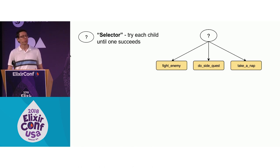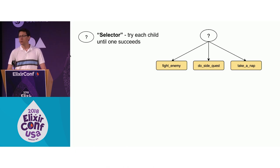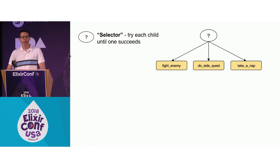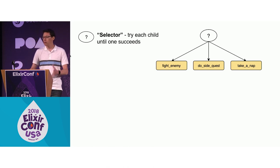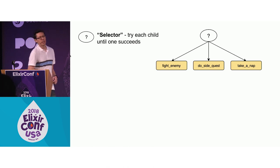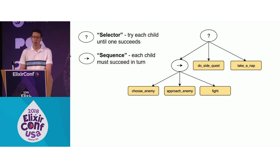In this very simple tree — like a behavior tree for a little RPG character — it will start off with the first child, which is fight enemy. If that fails, then it will move on to do side quest. If that succeeds, then this whole thing will succeed and it starts over again. But just one layer like this is very simple, so the interesting thing happens when you build up more.